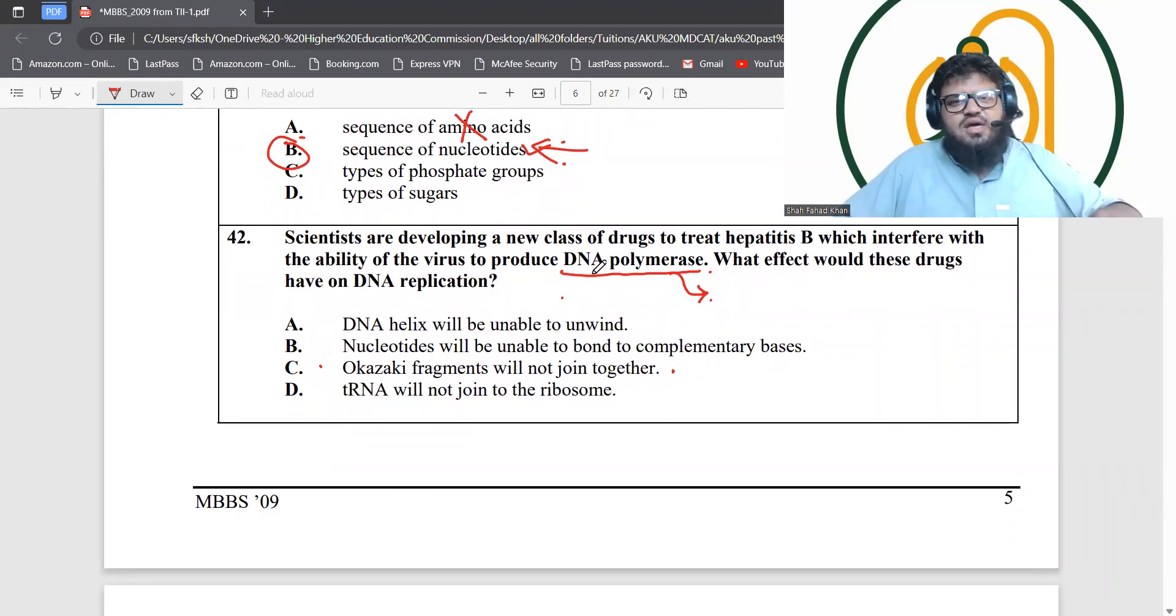Next is question 42. If DNA polymerase is blocked by this drug that scientists are developing to treat hepatitis B, what stage of DNA replication will be impaired? This question might need more information or might be incorrect. It cannot be A because it's helicase that unwinds DNA. Okazaki fragments will not join together is not the answer because it's ligase that joins them. The option about RNA and ribosomes has nothing to do with this—that's a translation process. The only answer left is B.